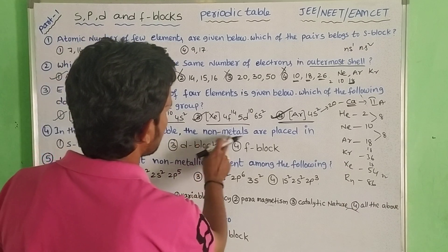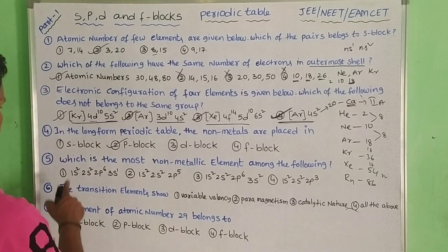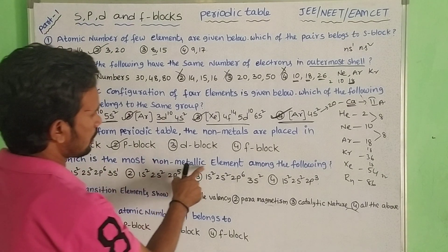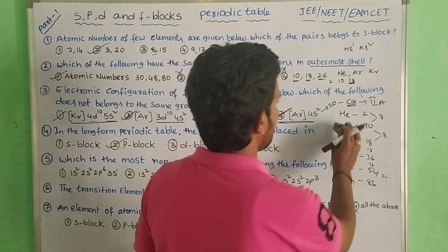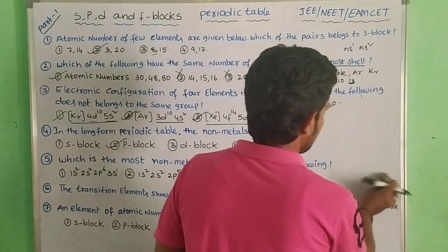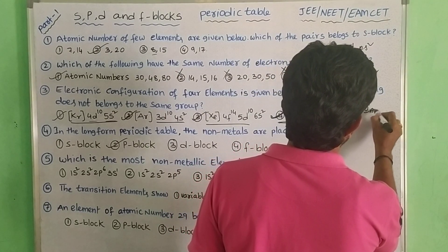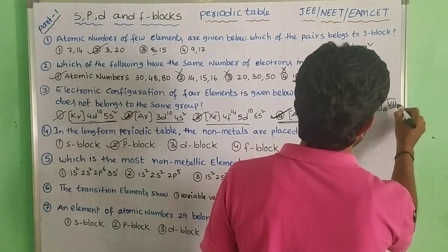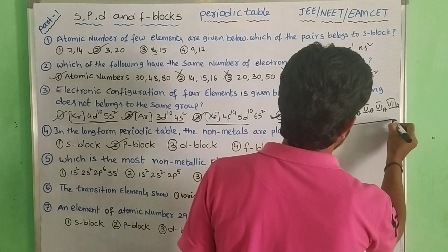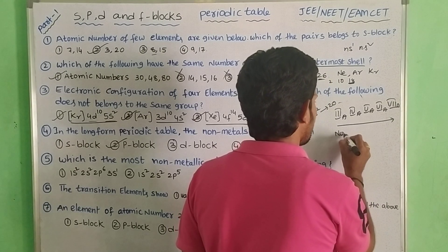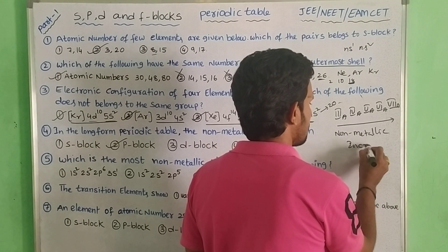In the long form periodic table, the non-metals are placed in P-block. Which is the most non-metallic element among the following? Going from left to right, non-metallic character increases.